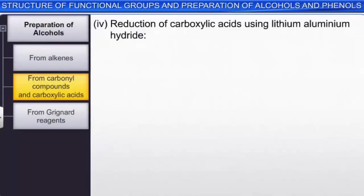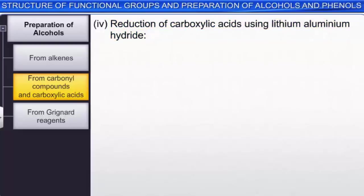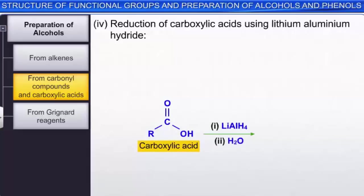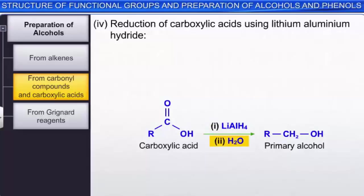A fourth route involves reduction of carboxylic acids using lithium aluminum hydride. Carboxylic acids are very difficult to reduce and require this strong reducing agent. The overall reaction shows carboxylic acids reduced to primary alcohols in a two-step process: first treatment with lithium aluminum hydride, then reaction with water. Since lithium aluminum hydride is expensive, its use is somewhat limited.